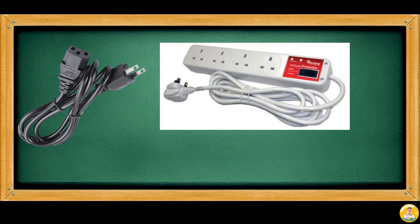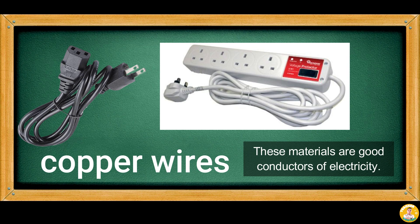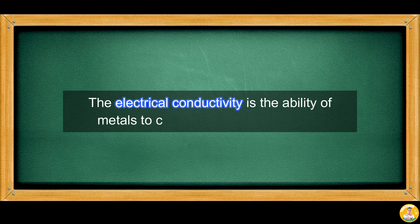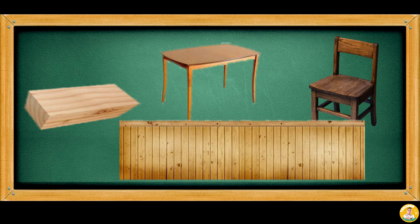Some materials found at home, like the power cord of the rice cooker or extension wires, are made from copper wires. These materials are good conductors of electricity. Electrical conductivity is the ability of metals to conduct heat and electricity. Hard materials like wood can be used to make tables, chairs, and walls of the house. They are also durable and tough.